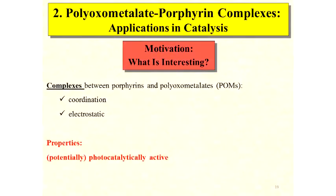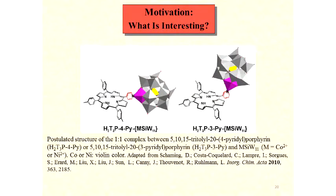Let's proceed to the second research project: complexes between polyoxometalates and metalloporphyrins with potential catalytic applications. Complexes between porphyrins and polyoxometalates could be of two types, made by coordinative interactions and electrostatic interactions. They are potentially photocatalytically active.